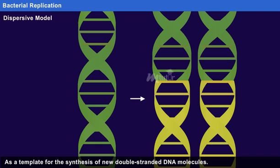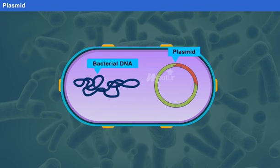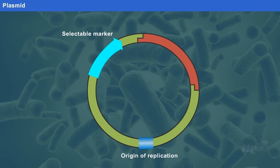Moving on, let us learn about the genetic structure of bacterial cell. Plasmid is an extra-chromosomal circular DNA, which comprises an origin of replication, a selectable marker, and a cloning site.